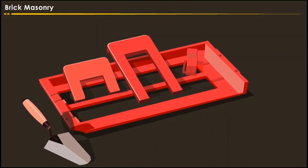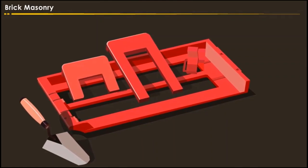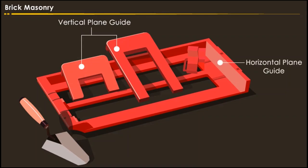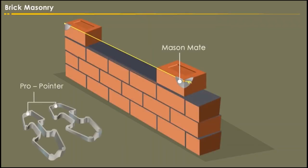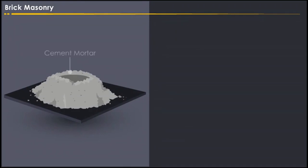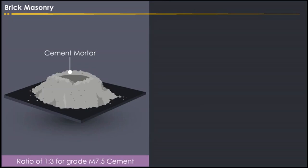The brick laying process can be done perfectly with professional brick equipment. In the images shown on the screen, you can see the vertical plane guide, the horizontal plane guide, the mason mate, and the probe pointer. Let us now discuss the process of making cement mortar. The preparation of cement mortar is done in the ratio of 1:3 for grade M7.5 cement.